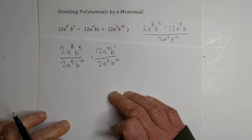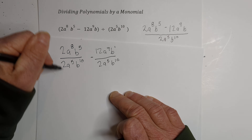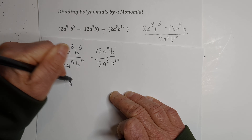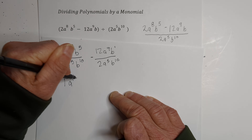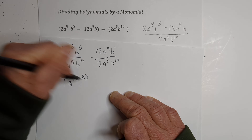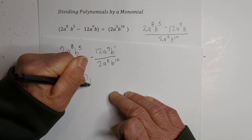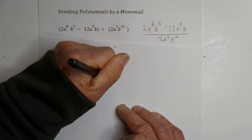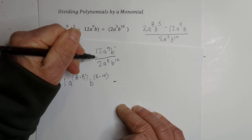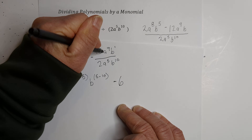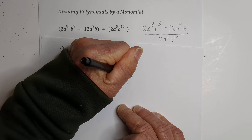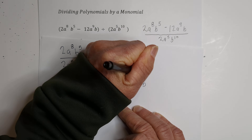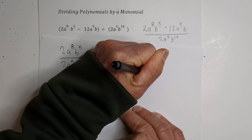Now I just apply the rules of division. I'm going to take 2 divided by 2, that is 1. Then with exponents, when you divide, you subtract — so you have a to the 8 minus 5, and then b to the 5 minus 10. Minus — we're going to do the same — 12 divided by 2 is 6, we have a to the 9th minus 5, and then b to the 1st minus 10.